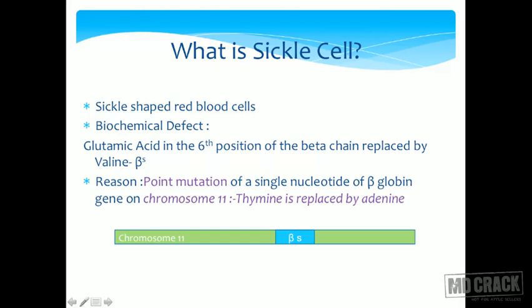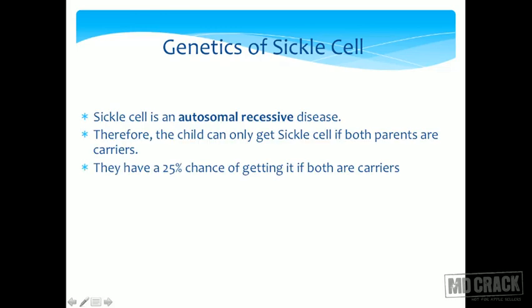The reason for this replacement is a point mutation of a single nucleotide of the beta globin gene on chromosome 11 — thymine is replaced by adenine. A simple point mutation can lead to sickle cell disease. Genetically, sickle cell disease is autosomal recessive; a child can get it only if both parents are carriers, with a 25% chance of inheriting the disease.